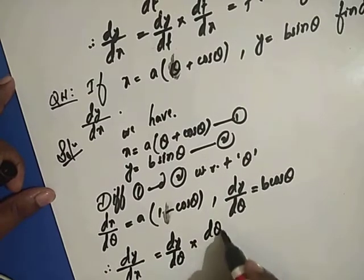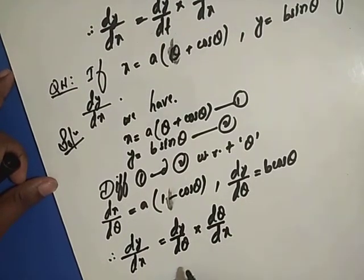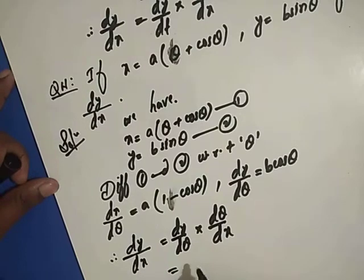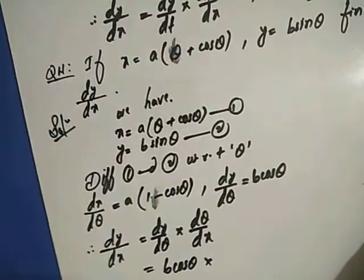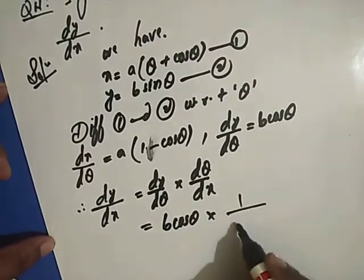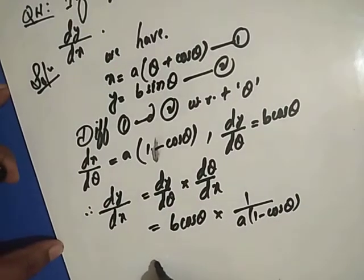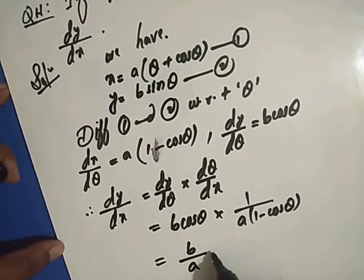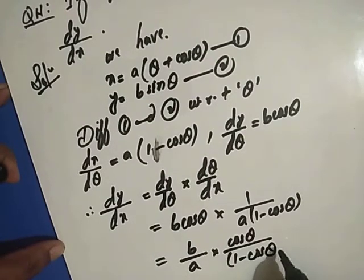Therefore, dy/dx equals dy/d(theta) times d(theta)/dx. This gives us dy/dx equals b cos theta times 1 over a(1 minus cos theta), which simplifies to (b/a) times cos theta over (1 minus cos theta).